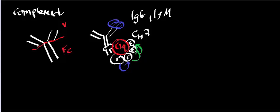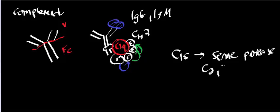So the initial thing that happens is C1Q binds, causing a conformational change that activates one C1R, which activates its partner C1R, and then they both activate the C1Ss. The C1S is the active serine protease — specifically for activating C2 and C4. C2 and C4 are two other proteins that come into this complex once C1S becomes activated. Unfortunately, the numbers don't occur in order of activation; they correspond to the order in which the proteins were discovered. The next protein activated is C4.